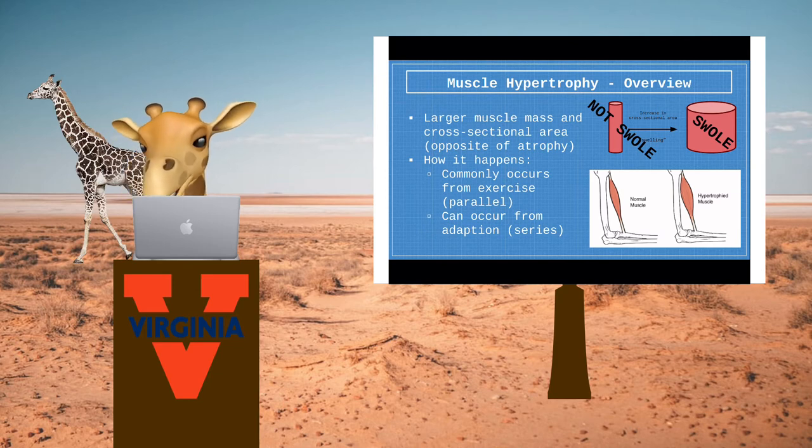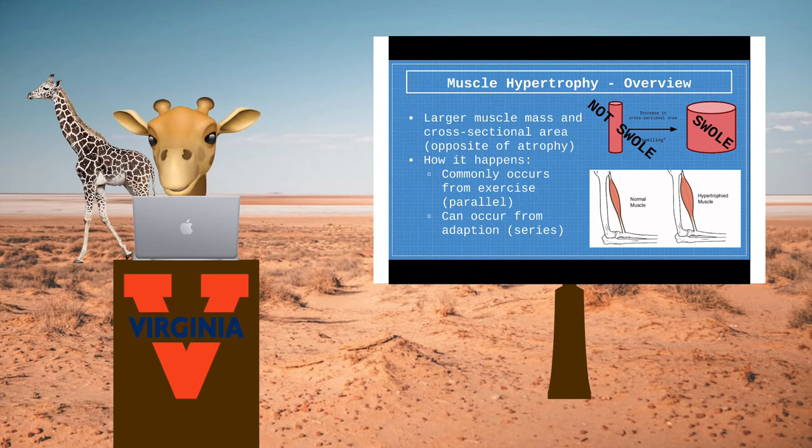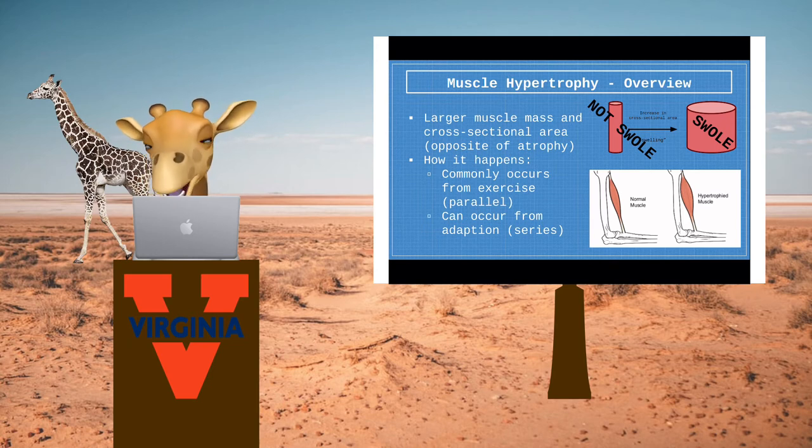Hypertrophy can occur from exercise where the muscle grows in parallel or sometimes from adaptation where it grows in series. Adaptation is usually the result of an injury. For example, a muscle in a cast needing to adapt to new lengths. We will focus mainly on exercise.